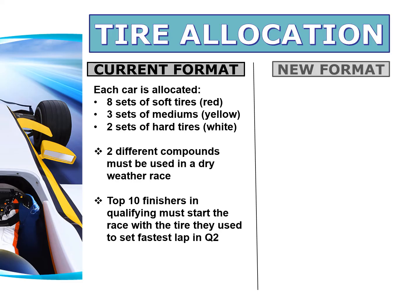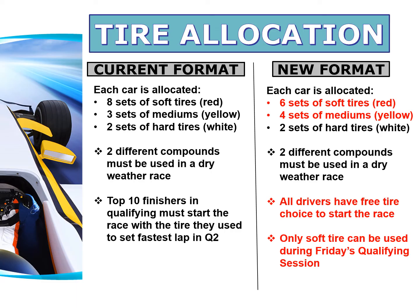For sprint races, the tire allocation changes. Each car is allocated 12 sets of tires for the weekend — six soft, four medium, and two hard. The rules regarding using different compounds during the race stay the same. There are two notable rule changes: all drivers have free tire choice to start the race, and only the soft tire can be used during Friday's qualifying session.